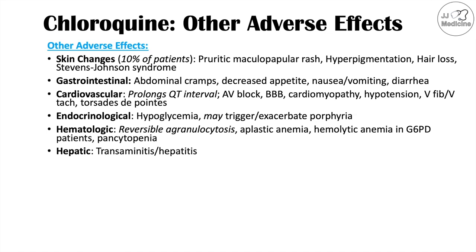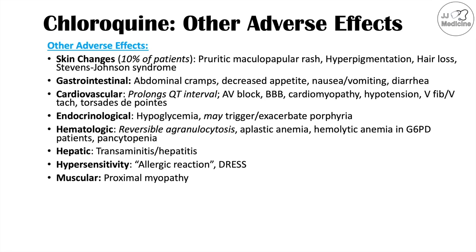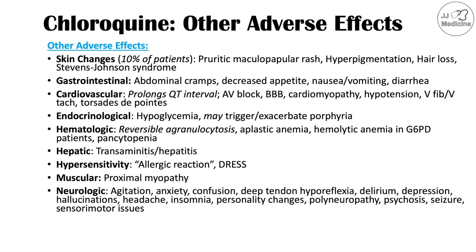Hepatic adverse effects include transaminitis and hepatitis — inflammation of the liver. Hypersensitivity reactions including typical allergic reactions can also occur, as well as drug reaction with eosinophilia and systemic symptoms (DRESS). There are also muscular adverse effects like proximal myopathy. Neurologic adverse effects include agitation, anxiety, confusion, deep tendon hyporeflexia, delirium, and depression, among many others.